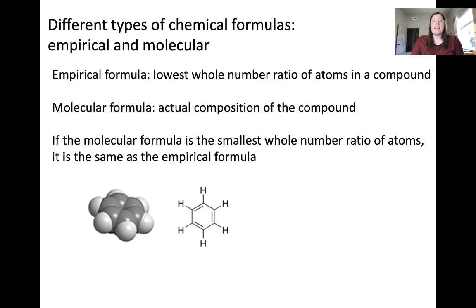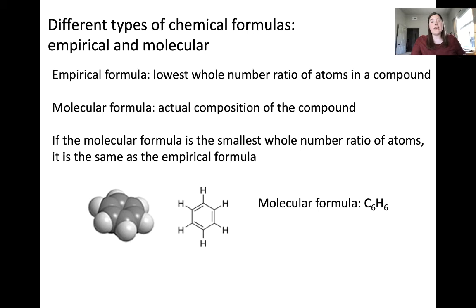Let's take this molecule for example. If you inspect these different representations of this molecule, you'll notice the molecular formula — meaning the actual number of atoms in the compound — includes 6 carbons and 6 hydrogens. This gives a molecular formula of C6H6.